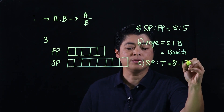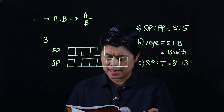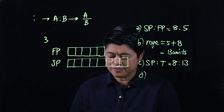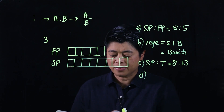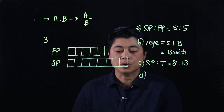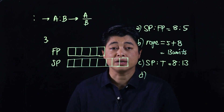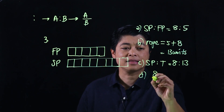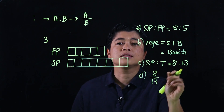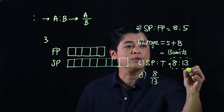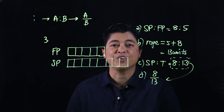In letter d, it says the length of the second piece is blank of the total length. Since it says 'blank of,' we're looking for a fraction. The second piece is 8/13 of the total length — they're essentially asking you to put the ratio into fraction form.